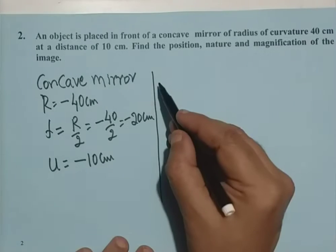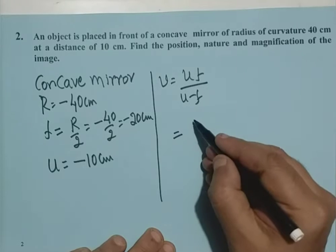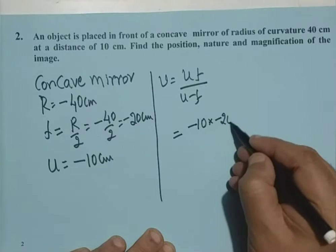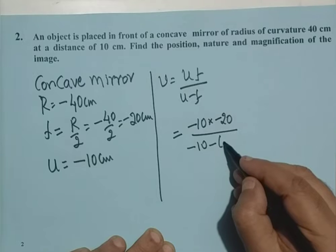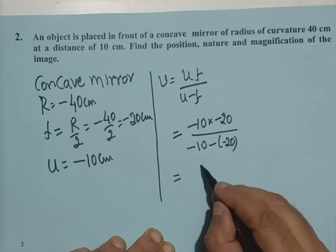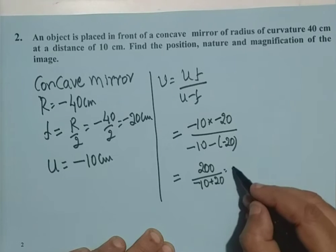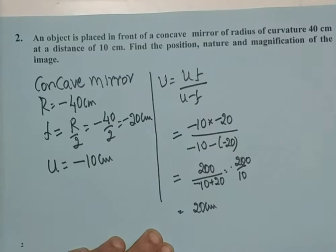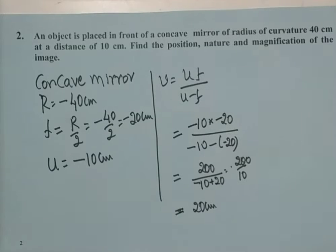Again, we calculate V using V equals UF by U minus F. Substituting U equals minus 10 and F equals minus 20: minus 10 times minus 20 divided by minus 10 minus of minus 20, giving 200 by 10, which is plus 20 cm. The image distance is positive, that is a virtual image.